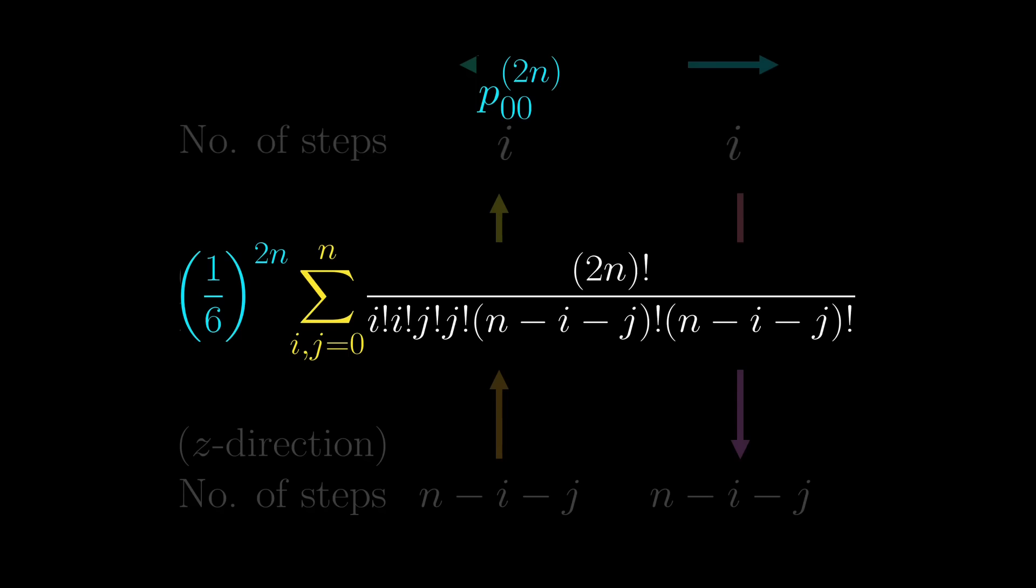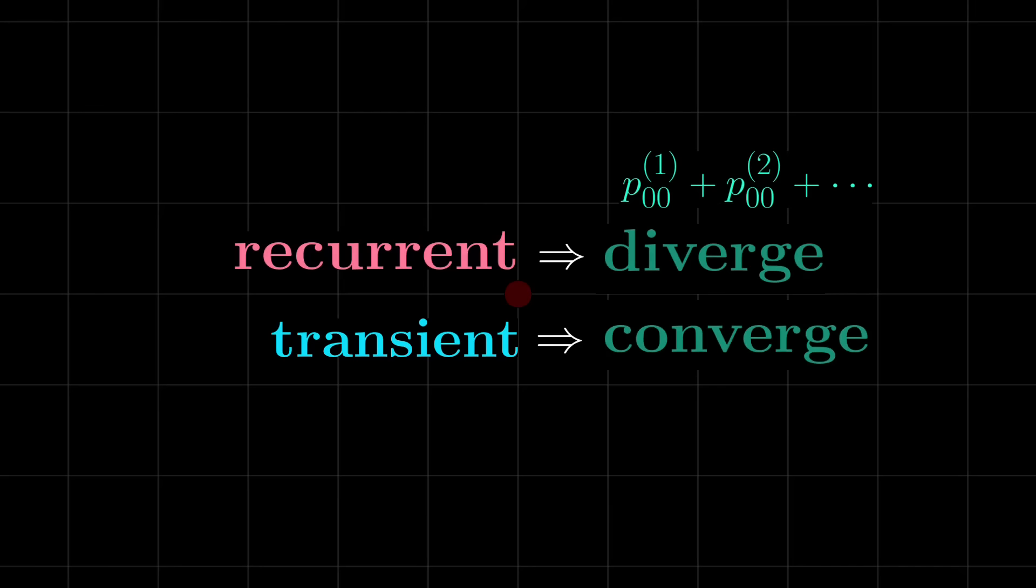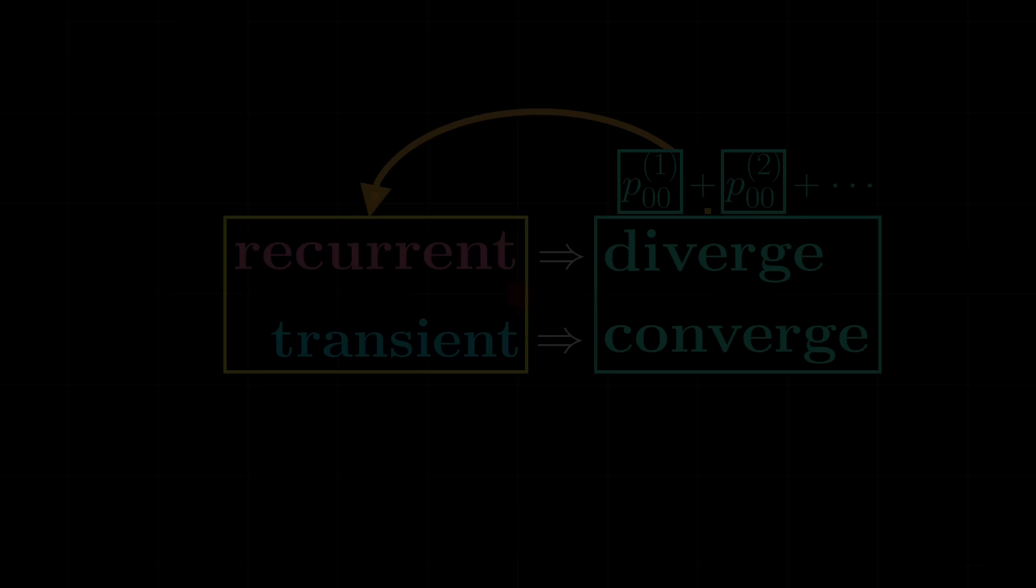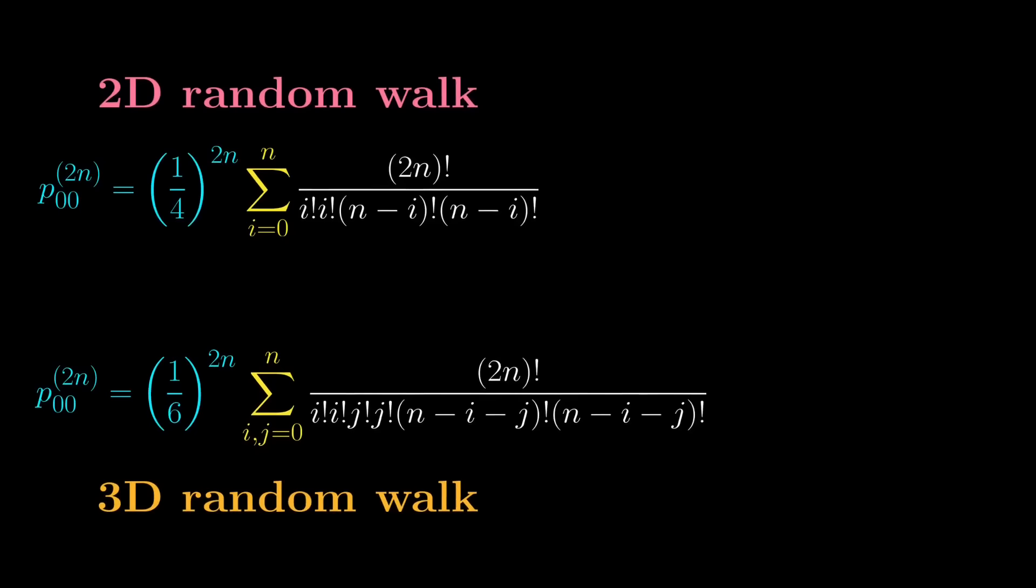But perhaps it might be useful to remind ourselves why we care about this. We have demonstrated that a state being recurrent or transient implies whether the series diverges or converges. So by knowing whether this series converges, we know whether the state is transient. In this chapter, we calculated those terms in the series with explicit expressions for the 2D and 3D cases respectively. And what remains is to show that the series formed by the 2D case diverges, and the 3D case converges.